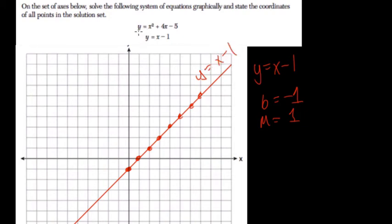The quadratic itself here, let's write it out, y equals x squared plus 4x minus 5.